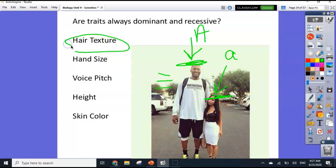Think about hair texture. If somebody with straight hair marries somebody with curly hair, what kind of hair is their kid going to have? They might have straight hair, they might have curly hair, but sometimes they might have wavy hair or a little of both.